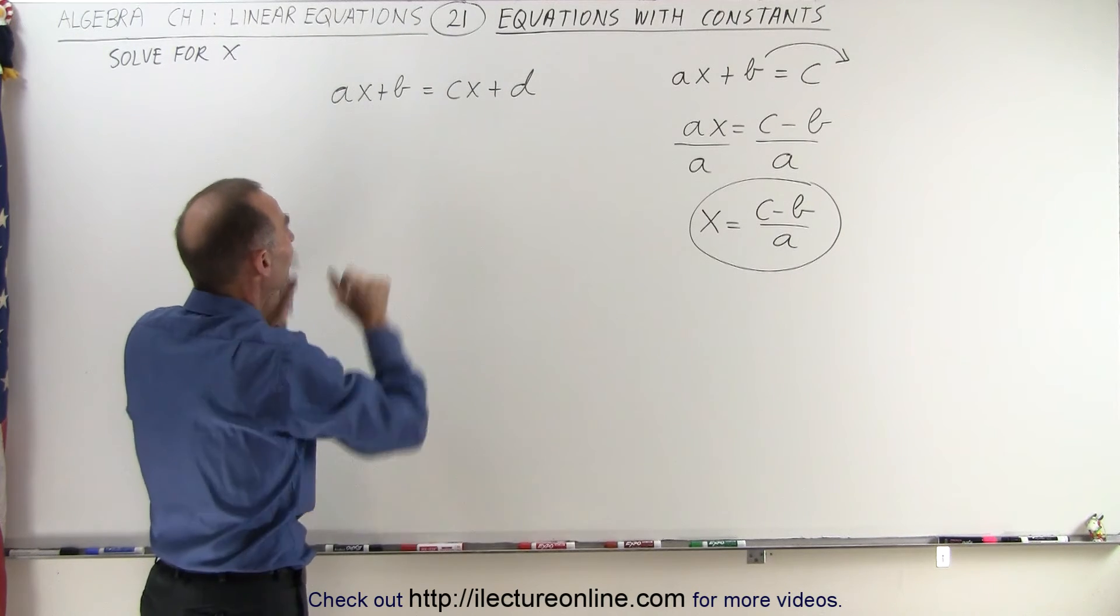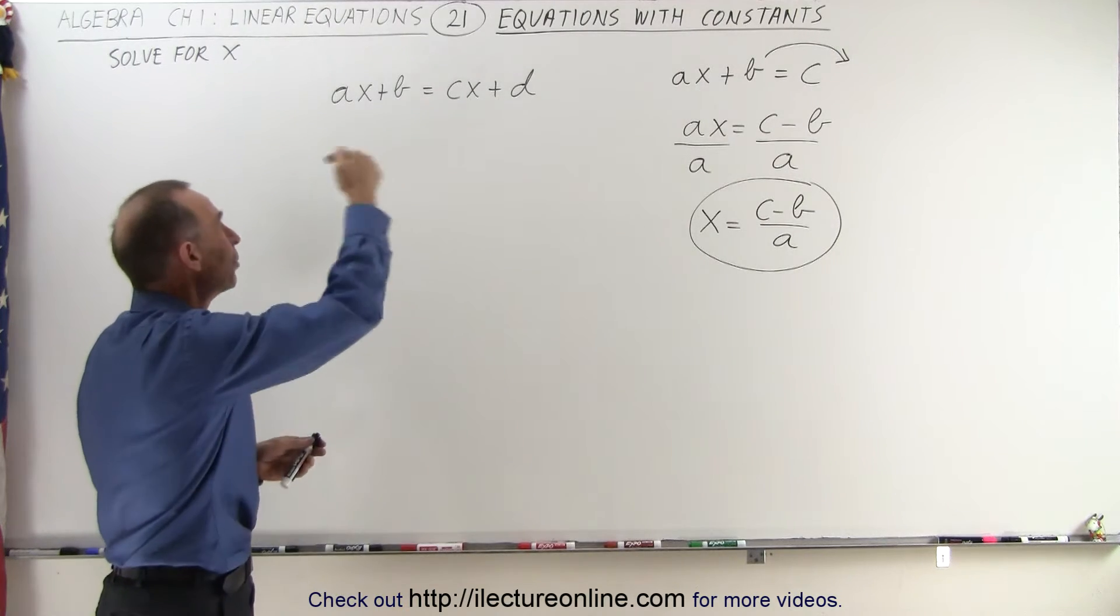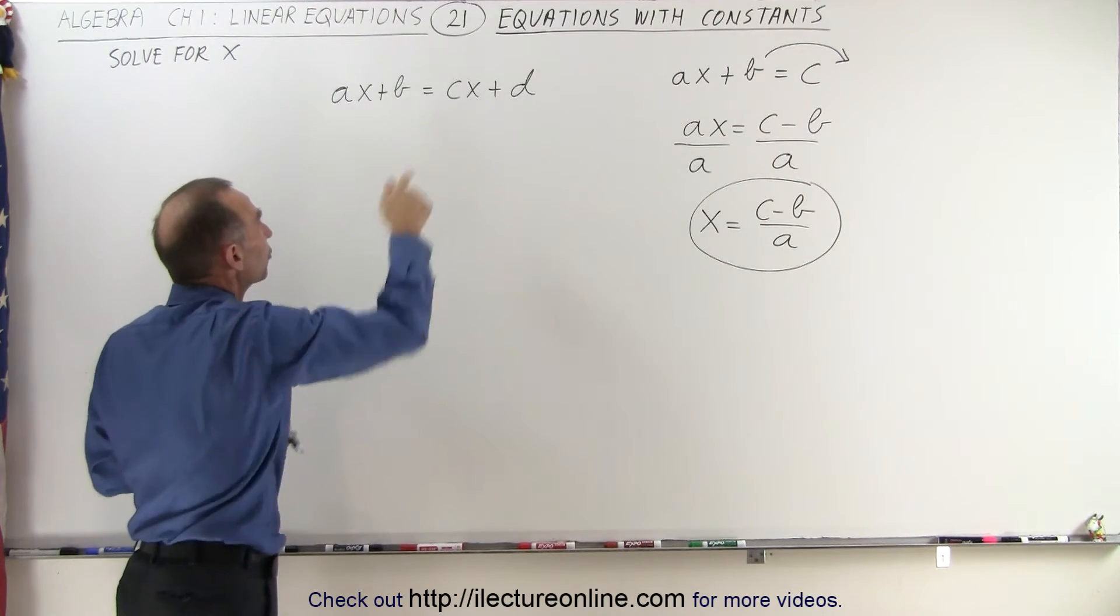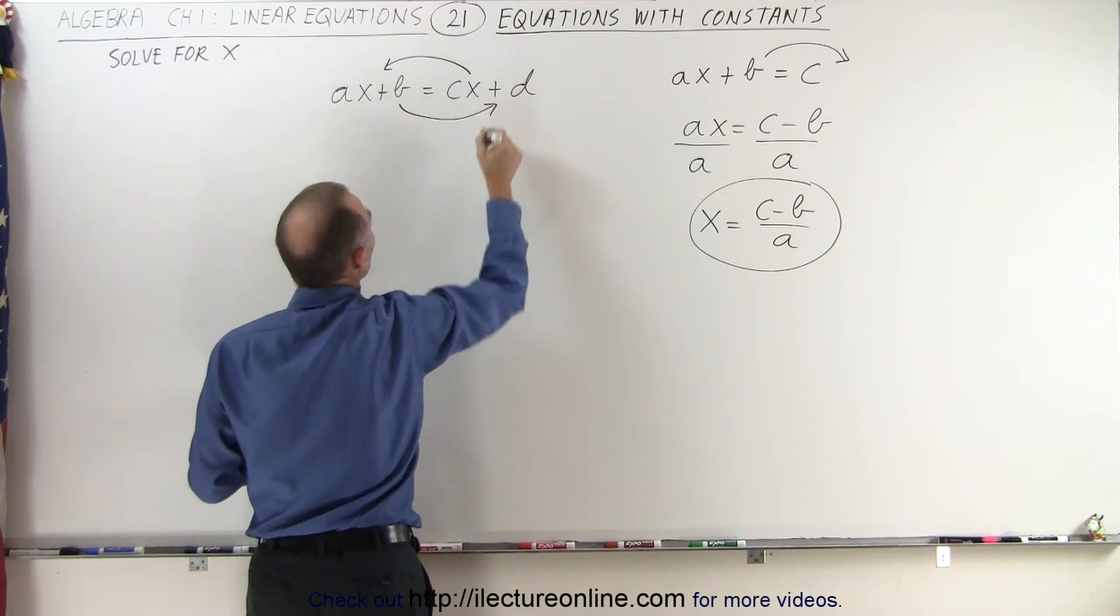Now let's take a look at this example. Notice we have a term on the right side that contains X which means that one must go to the left and B must go to the right. So we're going to move the CX term to the left and the B term to the right.